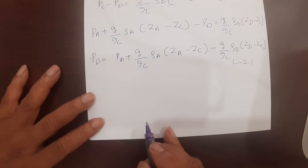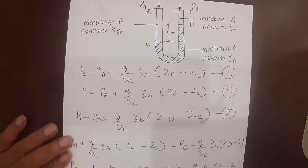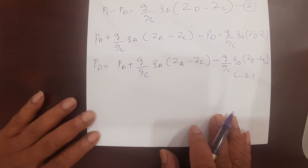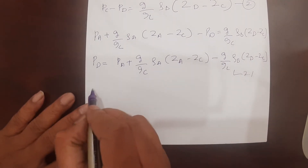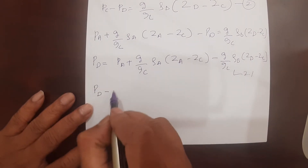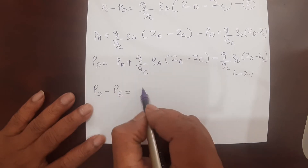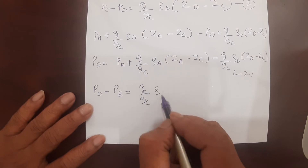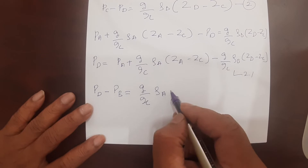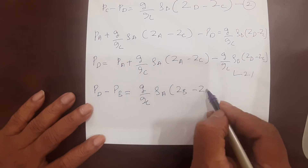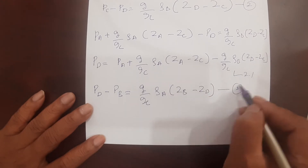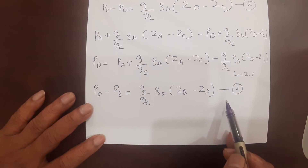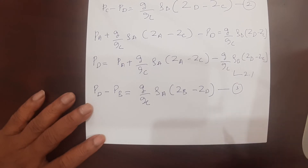Now applying the hydrostatic equilibrium condition between the last pair of stations, B and D: P_D minus P_B equals (G/Gc) × rho_A × (Z_B minus Z_D). This is Equation 3. We will now substitute P_D from Equation 2.1 into Equation 3 to obtain the final result.